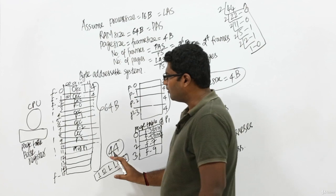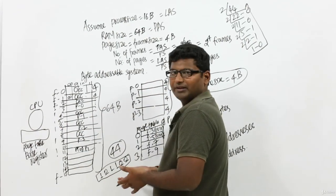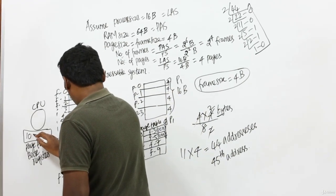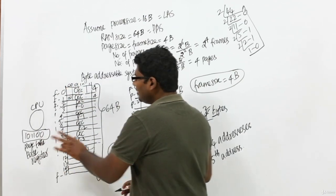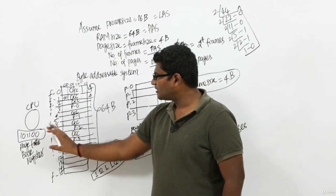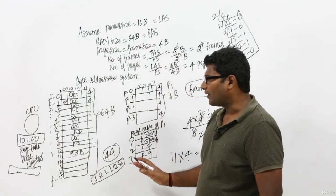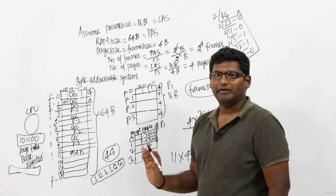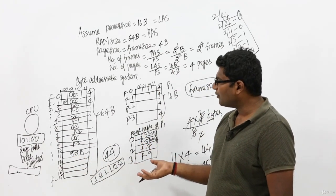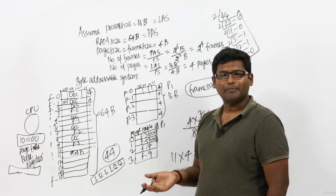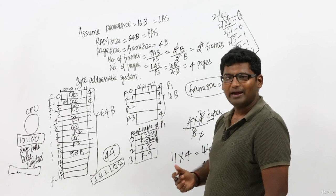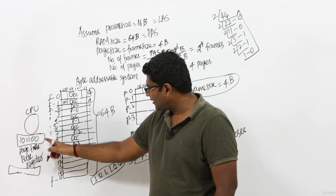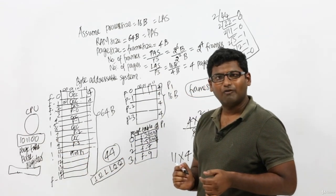So 101100 is the base address of the page table of P1, and it will be loaded inside the register. Using the page table base register address, the CPU will be able to reach the page table. But our CPU's ultimate goal is different — it needs to execute a particular line of process P1.